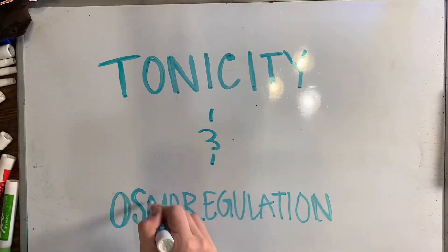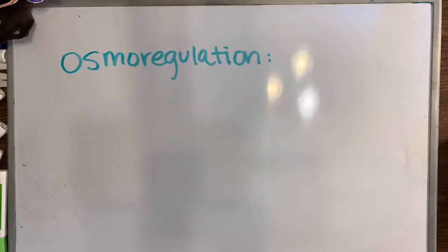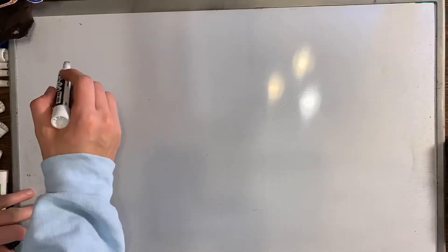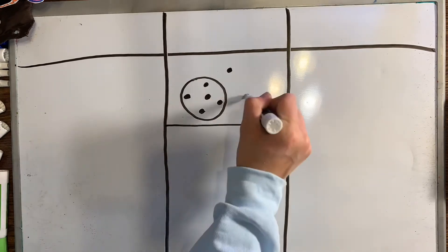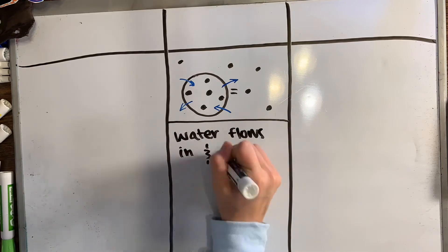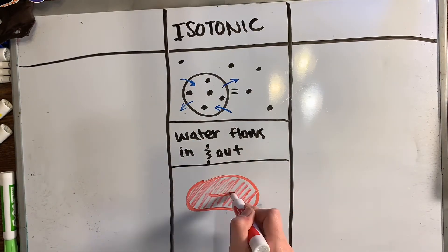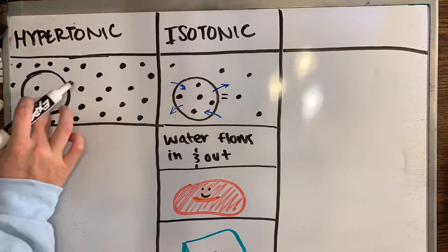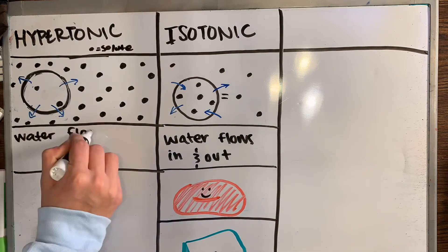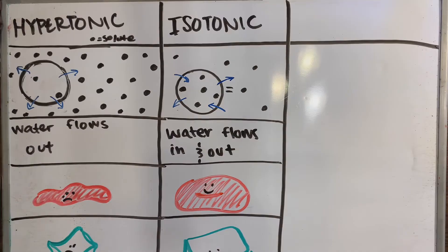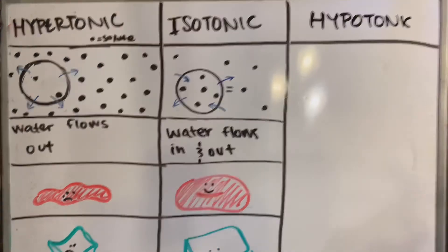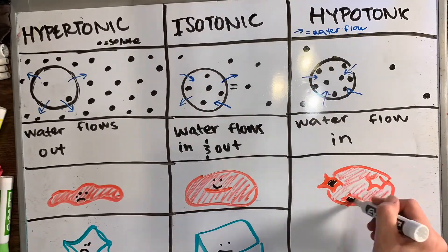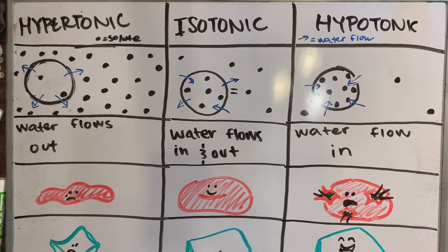The diffusion of water across a membrane is called osmosis. Osmoregulation is very important for all cells because it controls the solute and water balance to maintain homeostasis. There are three states a cell can be in when in a solution. When solute concentration is equal between the cell and its environment, the solution is isotonic — water flows in and out at constant rates. In a hypertonic solution, the external environment has a higher solute concentration than the cell, so water leaves the cell; in blood cells this causes the cell to shrink or lyse, while in plant cells the cell does not lyse due to the cell wall.